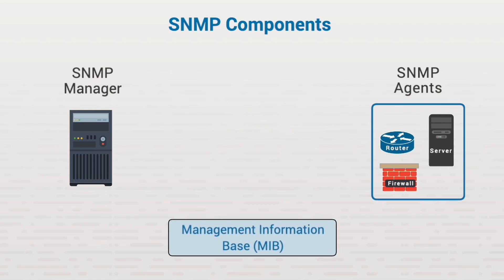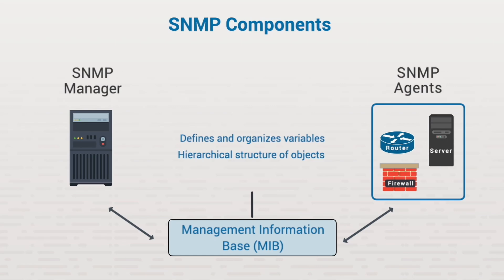Finally, we have the Management Information Base, or MIB. The MIB defines and organizes the parameters, called variables, that the agents will monitor on their respective devices. The SNMP manager uses the MIB to determine what data it will gather from the agents. The MIB is a hierarchical, structured definition of variables, similar to a database schema. The MIB is not an actual database — it simply defines the structure of the information used by SNMP. You can use SNMP walk messages to traverse through the hierarchical MIB structure.